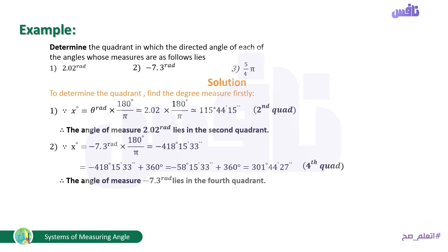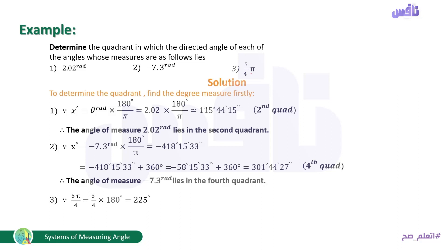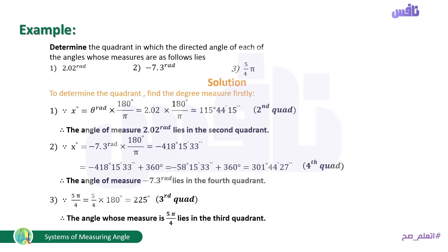For 5π/4: replace π with 180: (5/4) × 180 = 225°. Since 180 < 225° < 270, this angle lies in the third quadrant. So 5π/4 lies in the third quadrant.